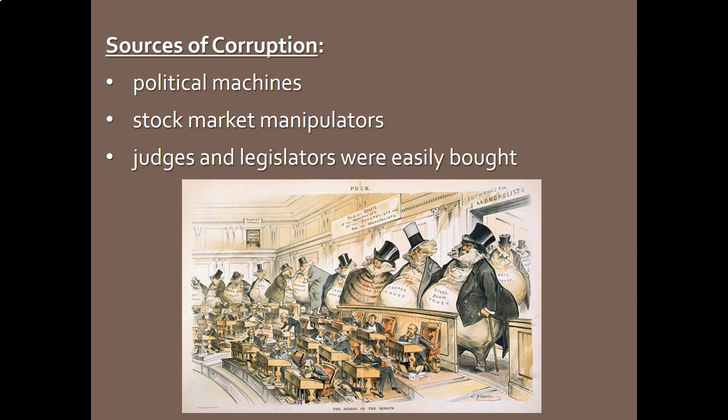In addition to political machines, you would see stock market manipulation going on in the Gilded Age. People would use insider information to benefit themselves on the stock market, or maybe try to drive the price down of a particular stock so they could buy it more cheaply. They could water down stock. There are all kinds of different techniques and things they could use.